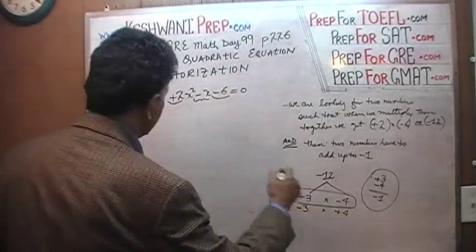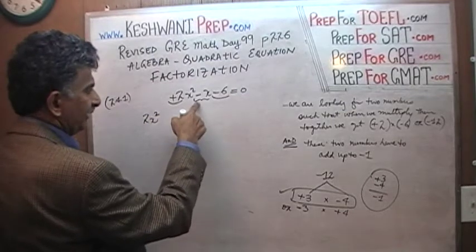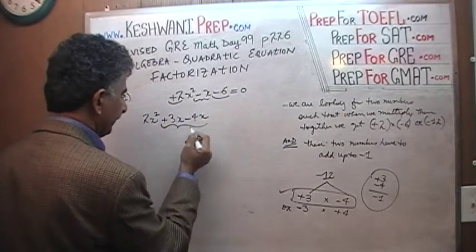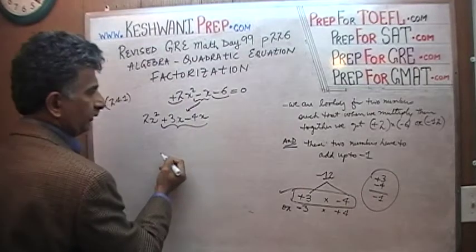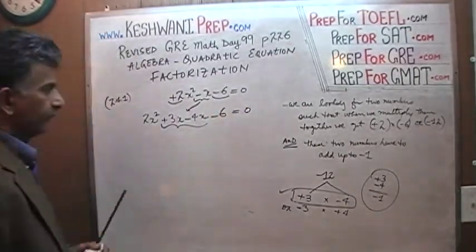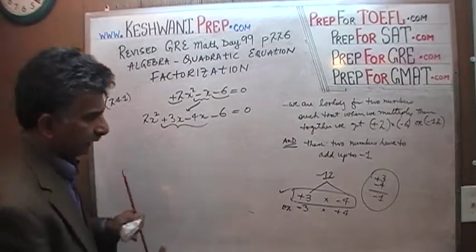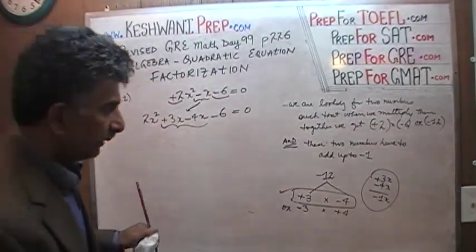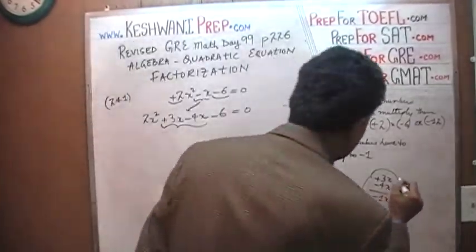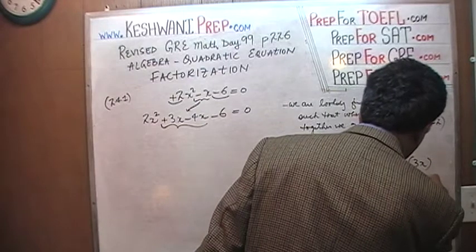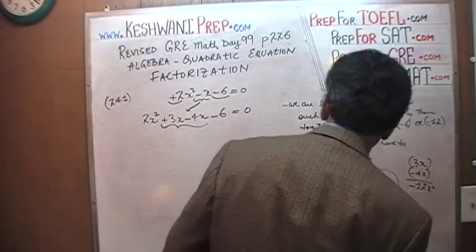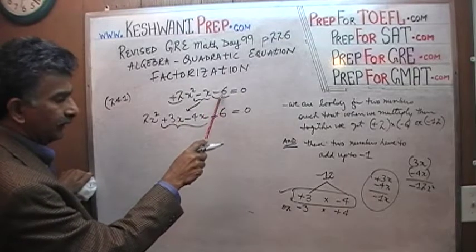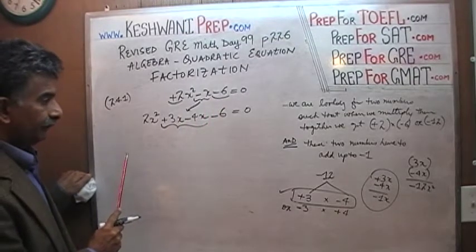So we have 2x squared, and we can rewrite the negative x as positive 3x and negative 4x — since positive 3x plus negative 4x gives negative x. Then negative six comes down. Positive 3x times negative 4x gives negative 12x squared, which confirms the method: 2x squared times negative four gives negative twelve x squared.